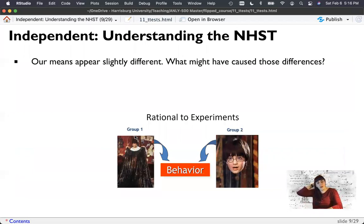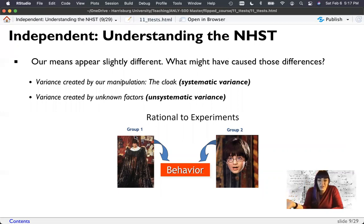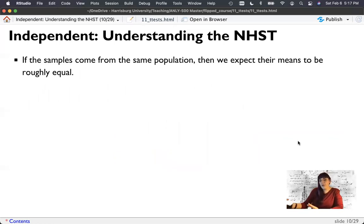So the rationale here is, what could have caused those differences? Well, it could be the variance in our manipulation, the cloak. This is our systematic variance, our good variance, our signal. And our signal to noise ratio all semester. This is the signal, the thing that we know we manipulated. There's also variance due to just people being different. There's also variance, which is our unsystematic variance, or our noise. So we're going to create that ratio of signal to noise.